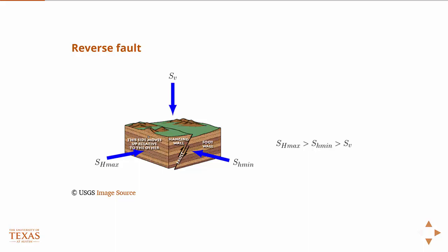And then the other characteristic of this is that now, if we have our fault plane, it's SH max that crosses that plane obliquely.